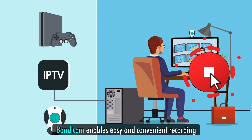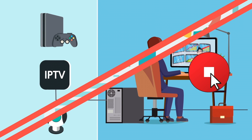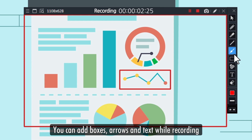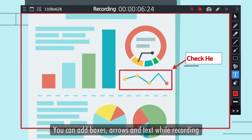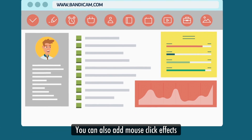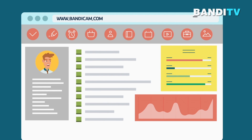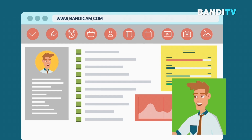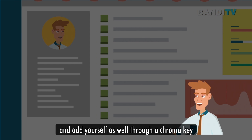Bandicam enables easy and convenient recording. You can add boxes, arrows and text while recording. You can also add mouse click effects and your own logo in captured video, and add yourself through a chroma key.